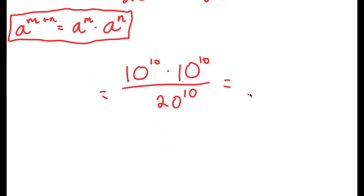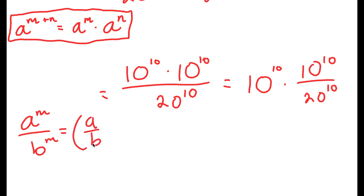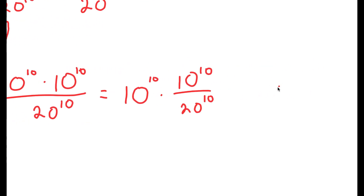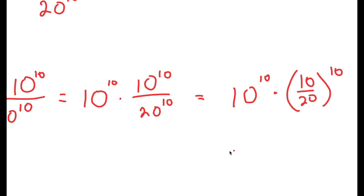I grouped 10 to the power of 10 over 20 to the power of 10, because this way I can use the property: a to the power of m over b to the power of m is equal to a over b to the power of m. So this turns into 10 to the power of 10 times 10 over 20 to the power of 10.